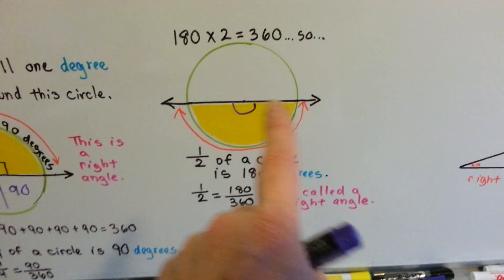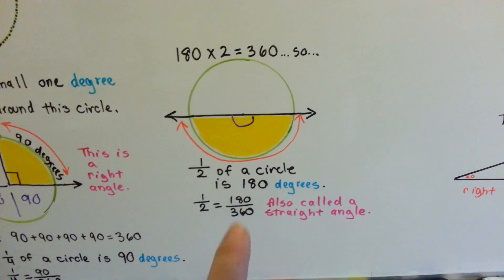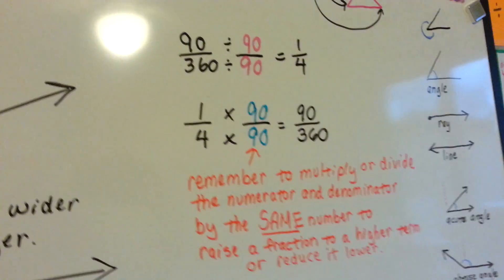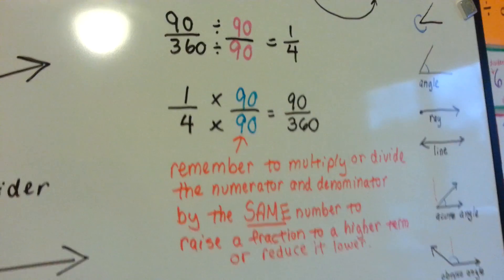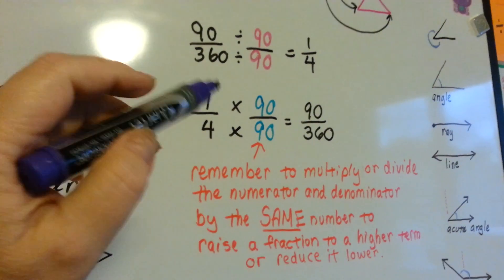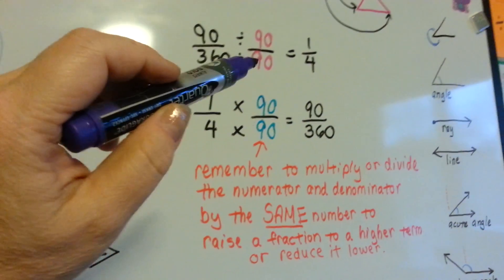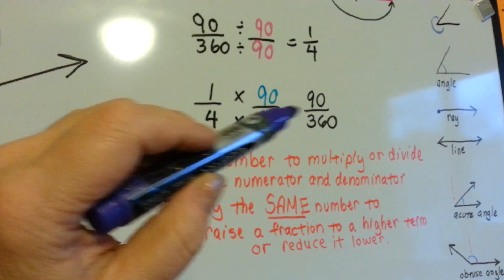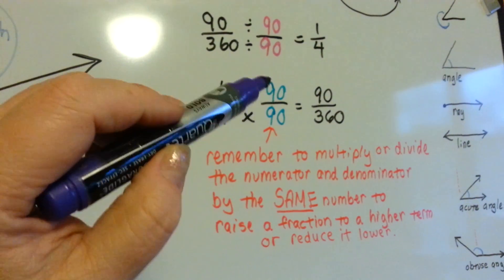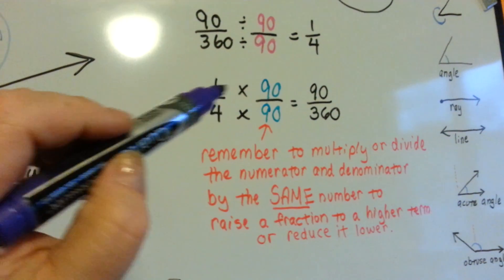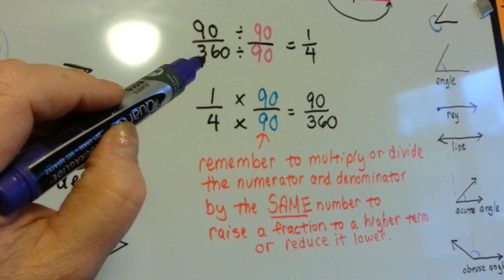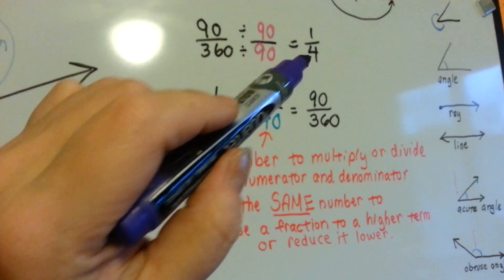Remember that half of a circle is 180 degrees, because 180 plus 180 makes 360. When we want to reduce or raise a fraction to higher terms, we divide it by the same number to reduce it, or we multiply it by the same number to raise it to a higher term. So we can see one-fourth — if we times the numerator and denominator by 90, it's 90 parts of 360. Or if we divide 90 over 360 by 90, we see that it's one-fourth.